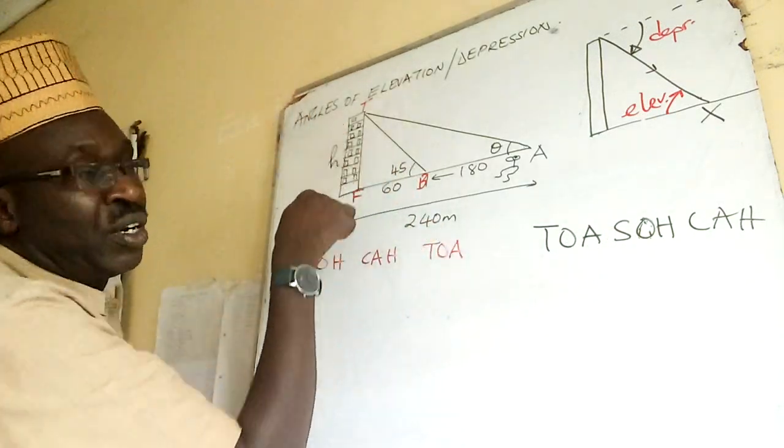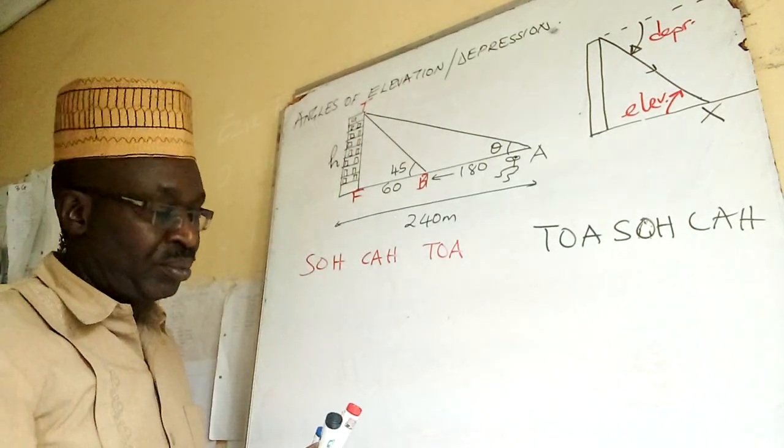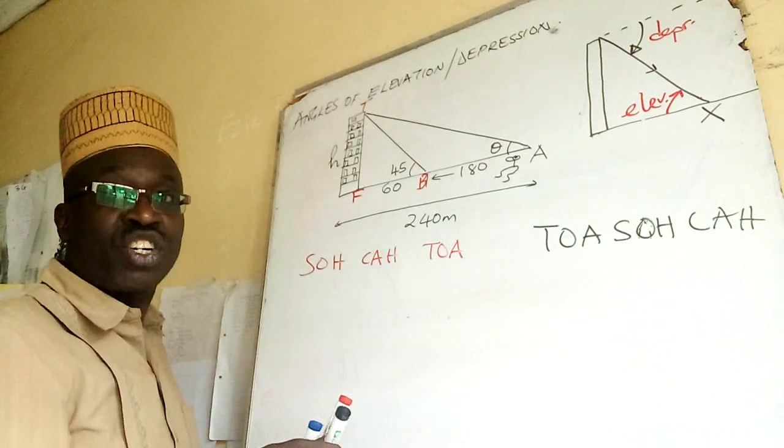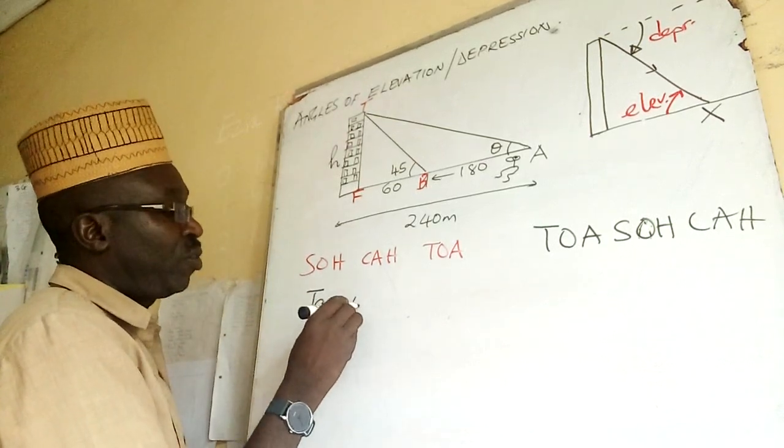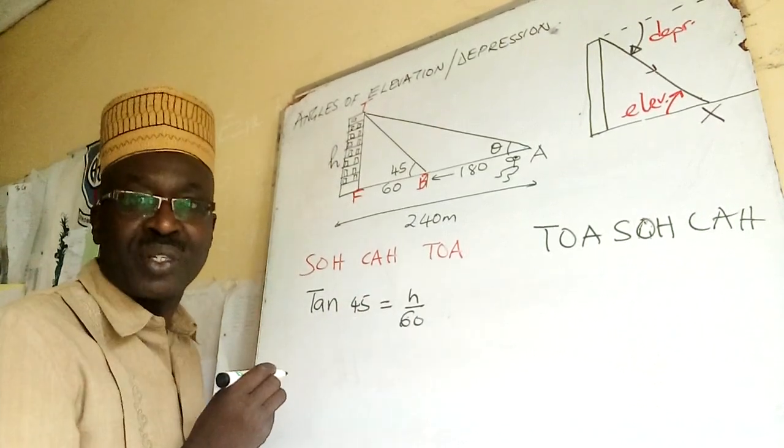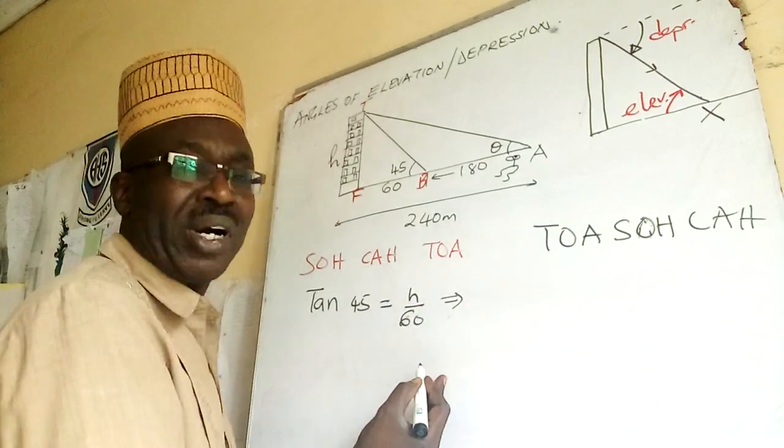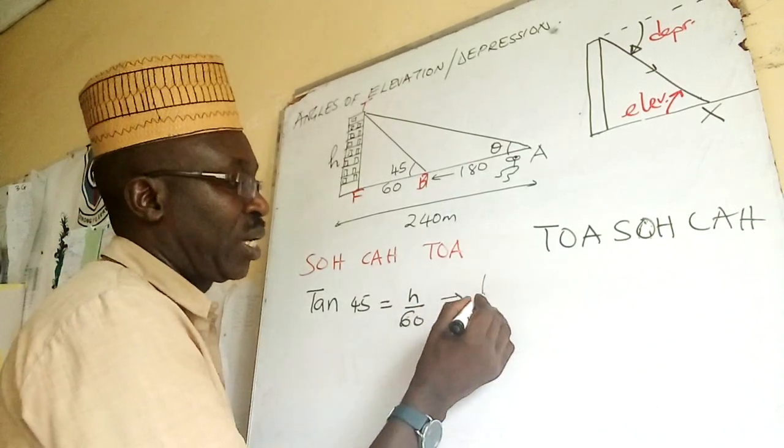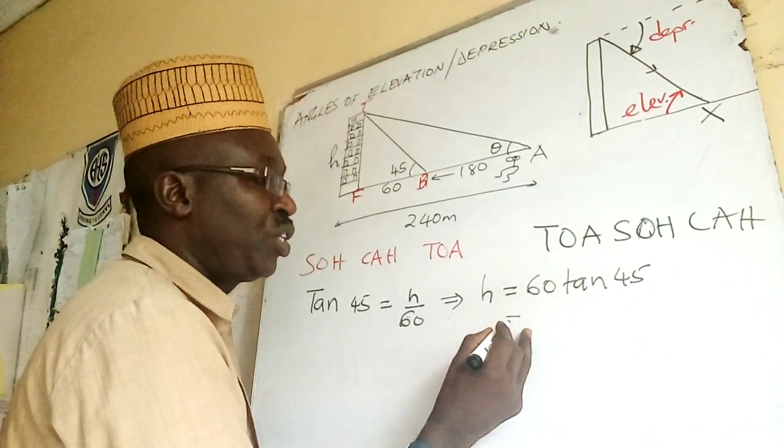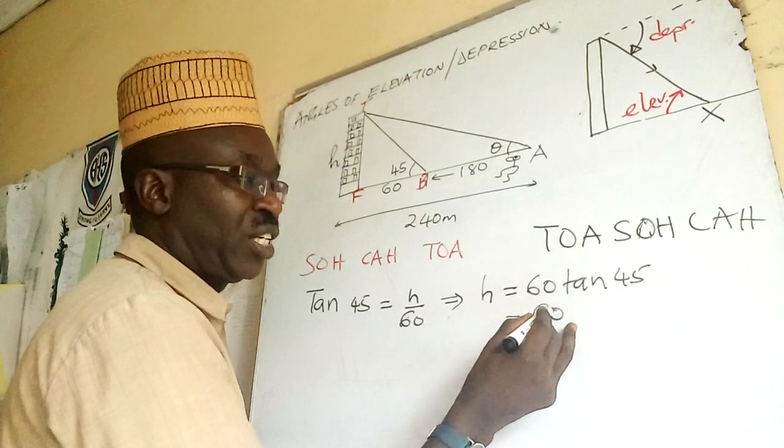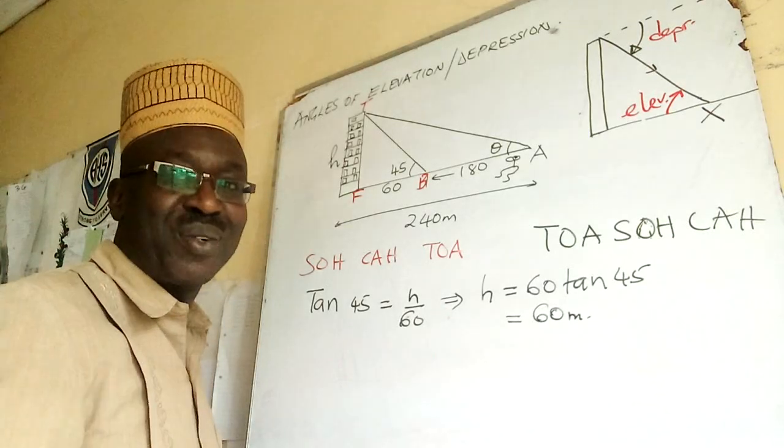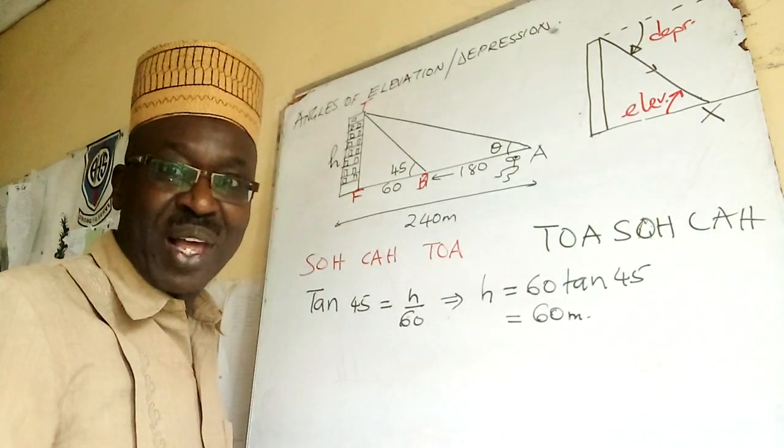Let us see from triangle BFT. What do I have? I have 60, I have h, I have that, so I can talk of tan. Tan 45 is equal to h over 60. This is so simple, automatically h is 60 tan 45 which is 60 meters. Tan 45 is one, simple example, tan 45 is one. Now I know the height of the building.